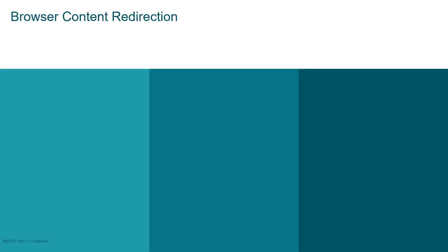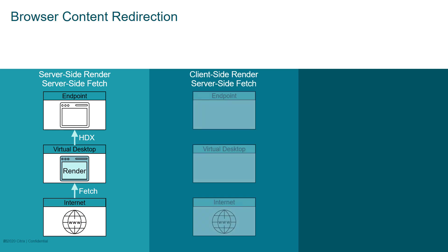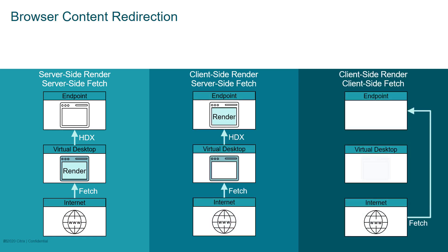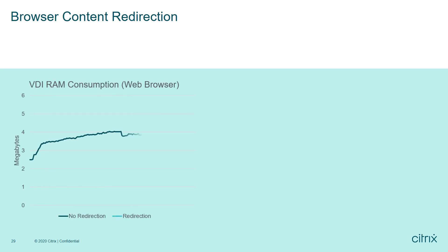Browser content redirection takes us one step further by determining which component fetches the content and which component renders the content. The more work we place on the virtual desktop, the greater amount of resources we're consuming. With browser content redirection, organizations can selectively choose which websites to redirect to the local endpoint.